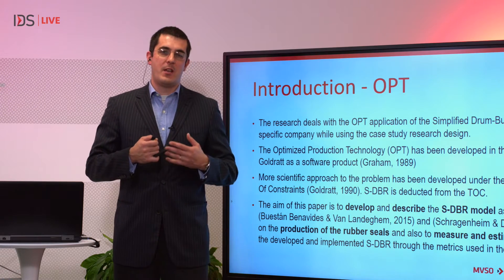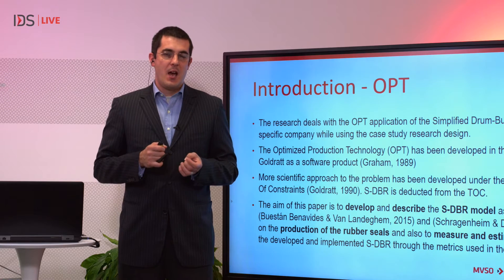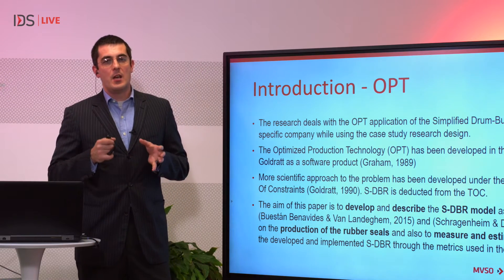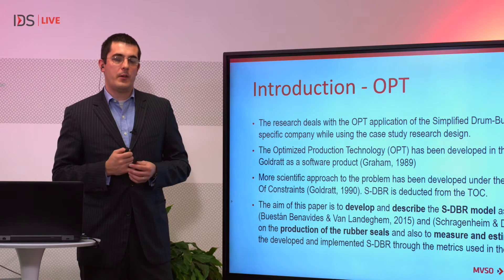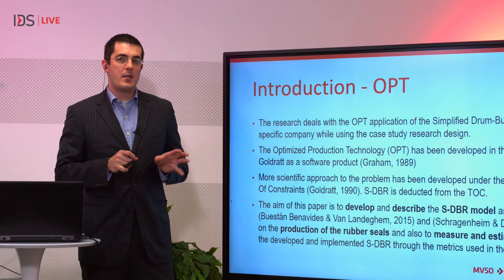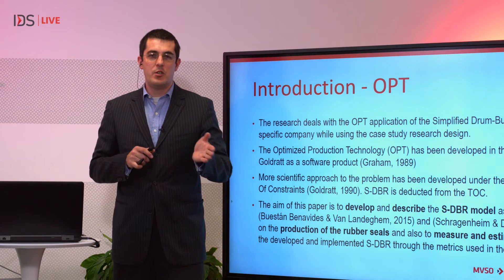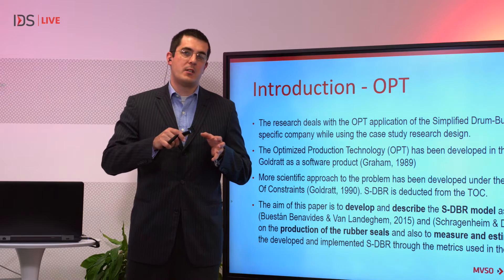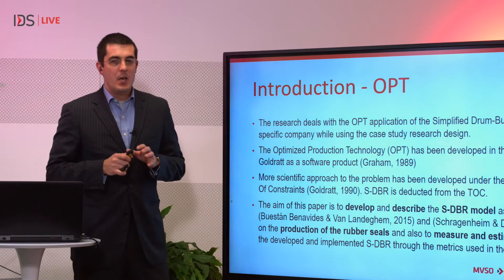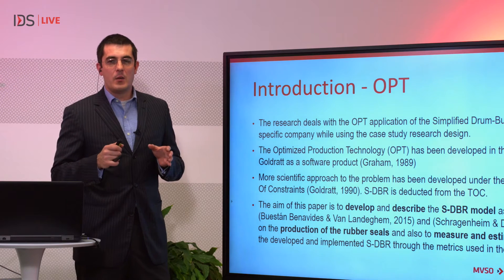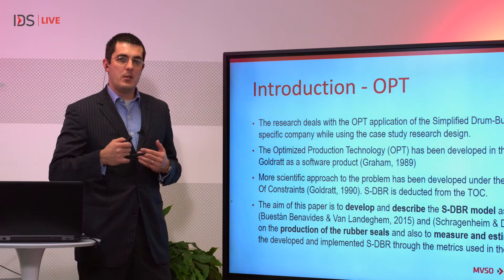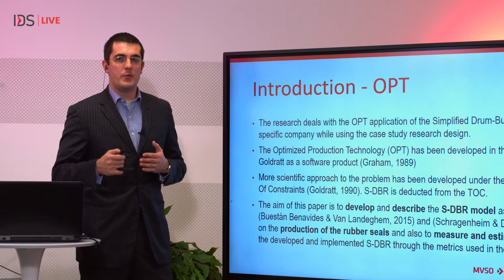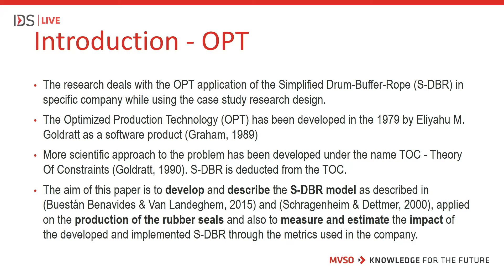The idea behind the theory of constraints is that optimal production for the whole manufacturing site is not created by the optimal or maximal production of each individual production site, but is driven by the slowest one — the production site with the smallest capacity. You can imagine this as traveling in a convoy: the speed of the convoy is determined by the maximum speed of the slowest car.